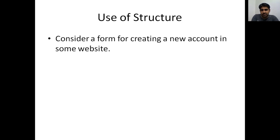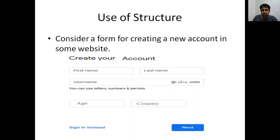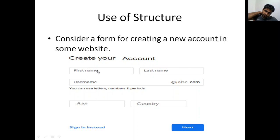Consider a Google account sign-up form. When creating an account, you enter different information. For example, on a sample website abc.com, the form asks for first name, last name, username, age, and country. First name, last name, username, and country are all character arrays, while age is an integer. So a single user record contains mixed data types.